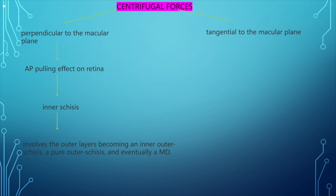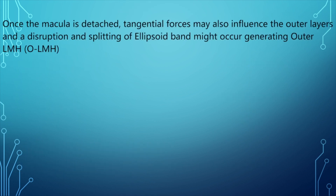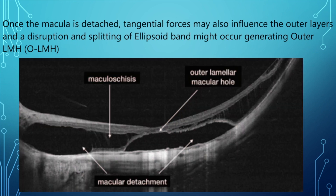The second centrifugal force is tangential to the macular plane, which causes the fovea to be laterally stretched and can lead to inner lamellar macular holes, progressing to a full thickness macular hole. If both forces act together, a macular detachment can accompany either a lamellar or full thickness macular hole. An outer lamellar hole is suggestive of poor visual outcome after surgery.